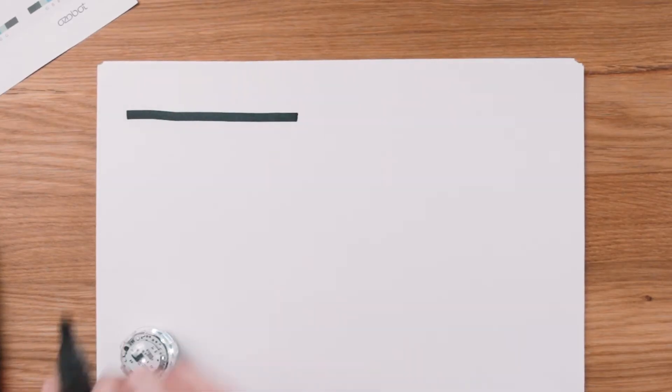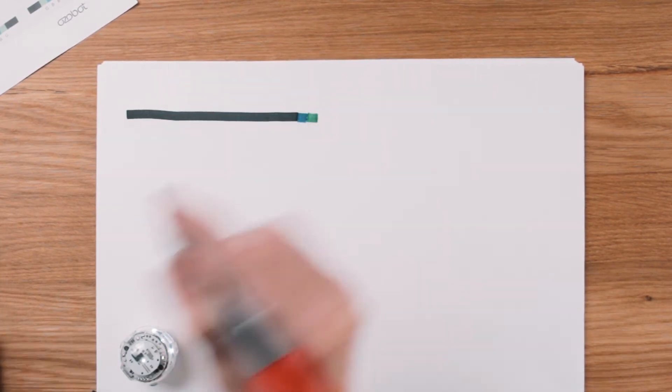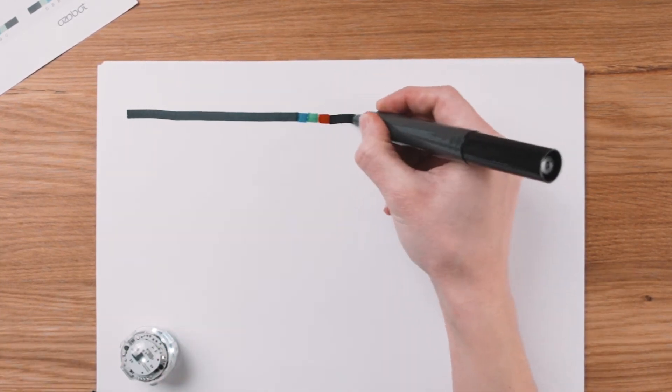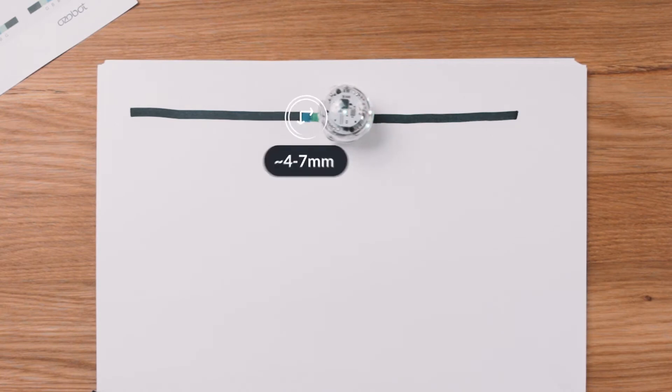Each square in your color code should be about the same width as the line, four to seven millimeters or one-fourth inch.